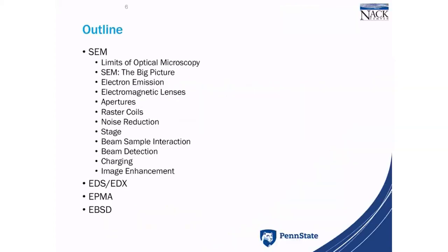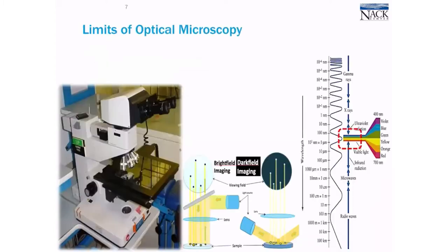Here's the outline. We'll be starting with SEM — scanning electron microscope. We'll be going over EDS — energy dispersive spectroscopy. Then we'll go into electron probe microanalysis and then electron backscatter diffraction. We have a huge package to cover.